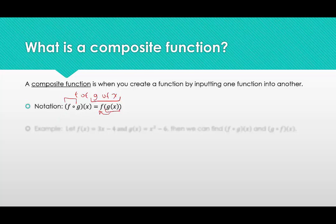Notice the notation for a composite function — it's a little open circle. That is the notation for a composite function, not to be mistaken for multiplication. In a previous video I talked about how we don't use a dot sign for multiplication — this is why, because the composite function symbol is so similar to that for multiplication, so we want to be careful.